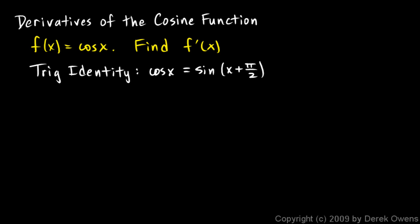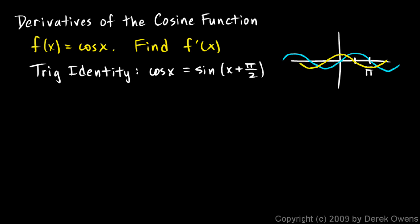Now you can see this graphically. If you make a quick sketch of the sine function, approximately like this — so this is pi here, and pi over 2 is right there — and the cosine function looks like this approximately. You should be able to see that if you take the sine function and shift it left pi over 2, what you get is the cosine function. That's what the plus pi over 2 inside the parentheses represents: a left shift of pi over 2.